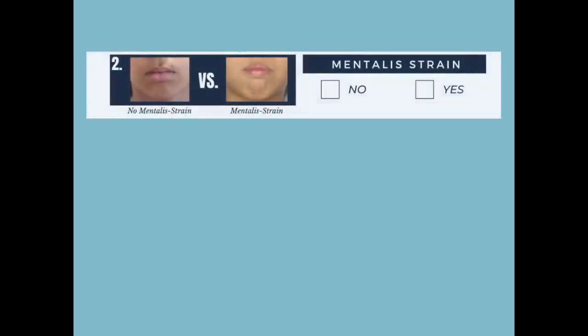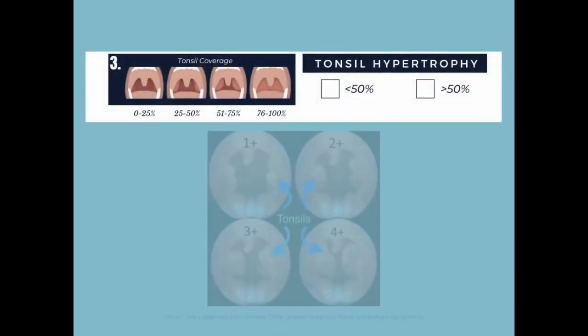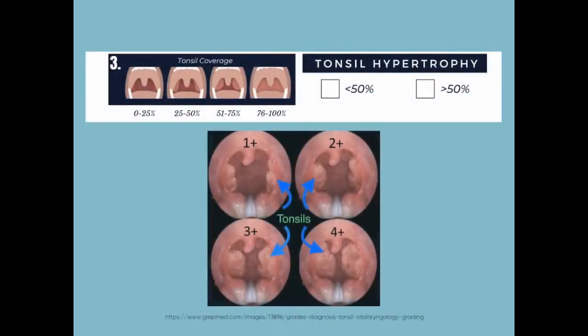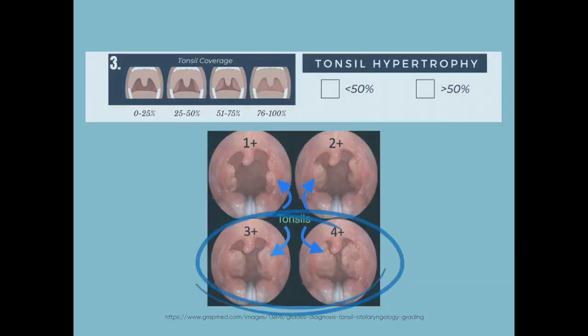Number two: is there mentalis strain? Have your patient close their lips and swallow. When there is improper muscle tone and function, the muscles of the chin may compensate and tighten while trying to keep the lips closed or during the swallow. Number three: tonsil coverage. Ideally we want to see less than 25% coverage. If there is more than 50%, this is a concern.